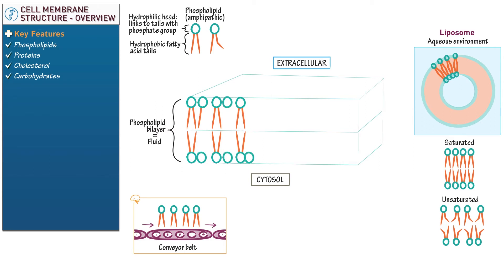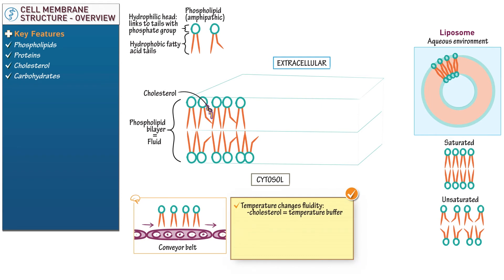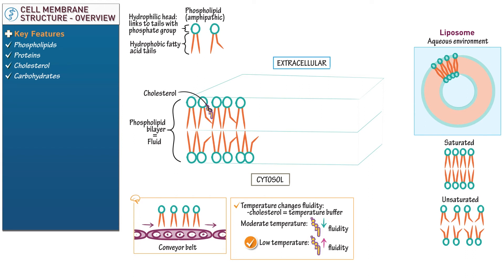Next, add a few unsaturated phospholipids to our three-dimensional membrane. Draw a small cholesterol molecule wedged between two phospholipids. Like phospholipids, cholesterol is amphipathic. Indicate that temperature changes membrane fluidity, but cholesterol acts as a temperature buffer — it resists these changes and stabilizes the membrane. Specifically, at moderate temperature, cholesterol decreases fluidity: it lessens lateral movement and stiffens the bilayer. At low temperature, cholesterol increases fluidity by preventing the close packing of molecules and thus preventing solidification.